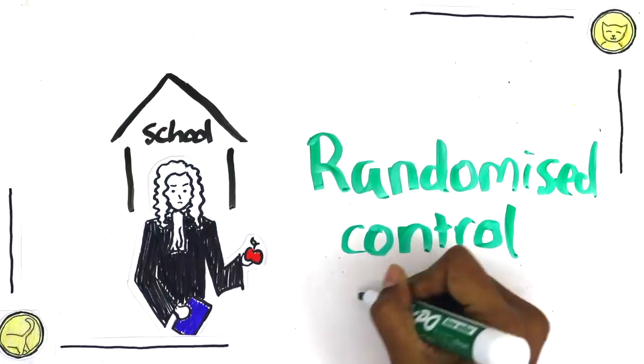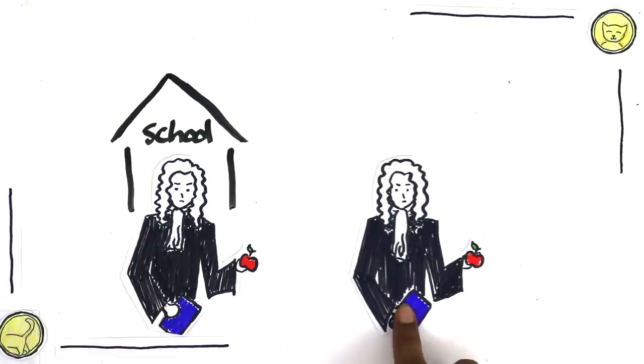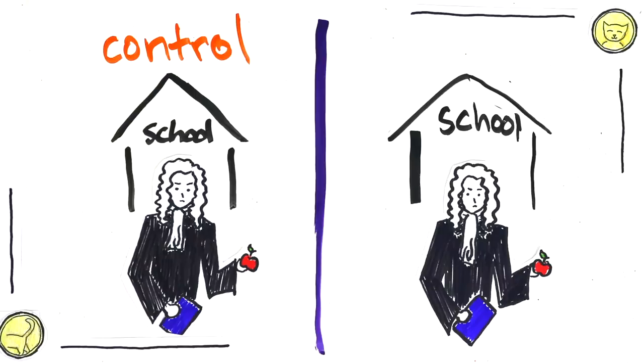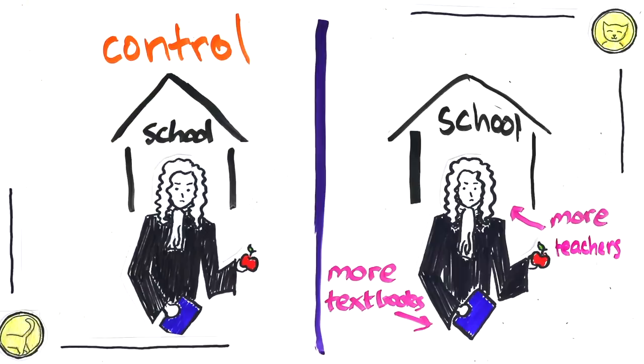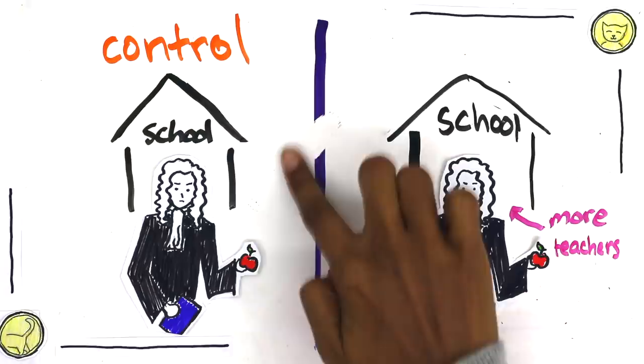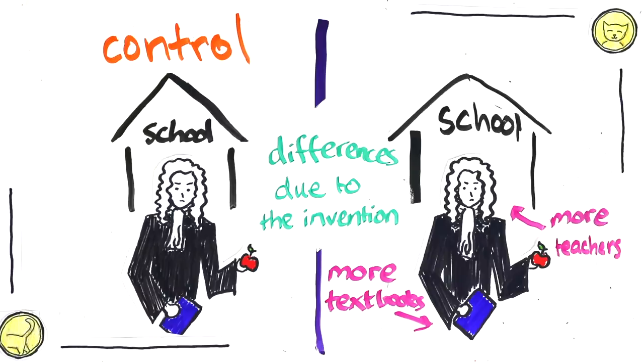This is what they entailed. He randomly split up the schools that he was studying in Kenya into two groups. One group would continue their schooling as usual and the other group would receive the new interventions, like more textbooks and more teachers. Finally, he'd compare the outcomes of the students and, provided the sample was big enough, he could conclude that any differences between the groups was due to the intervention.